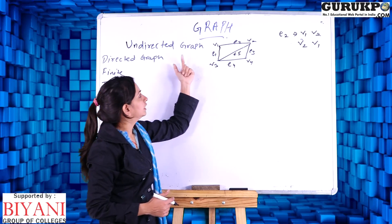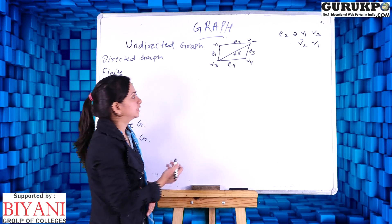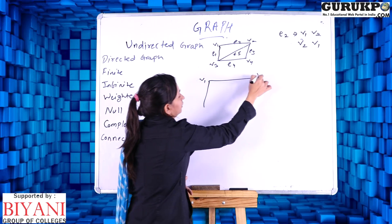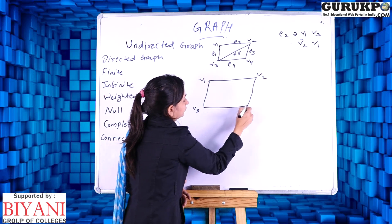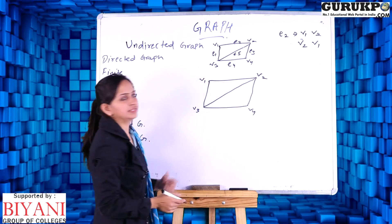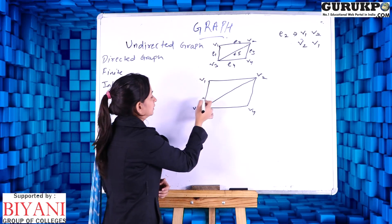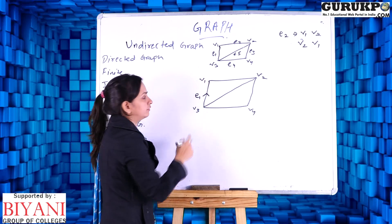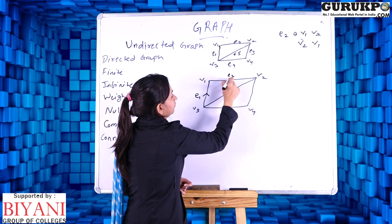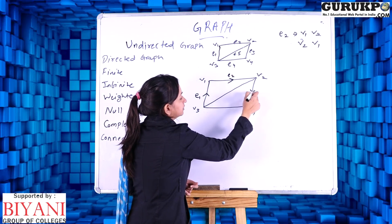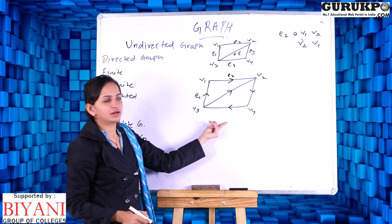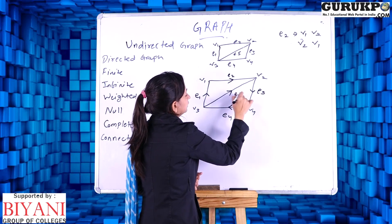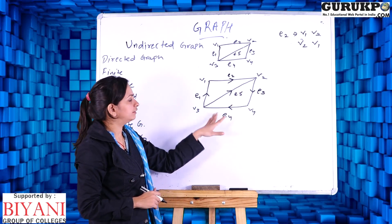So this type of graph is called undirected graph. The second type of graph is called directed graph. What is a directed graph? If I add direction to each of the edges — for example, edge E1 is going from V3 to V1, edge E2 has this direction — I am adding directions like this to each edge. Now this graph is called a directed graph.